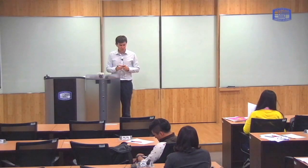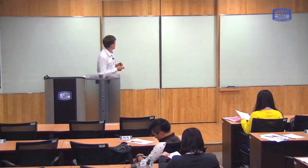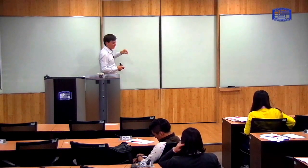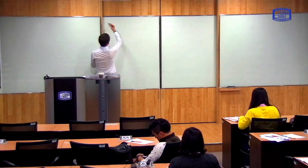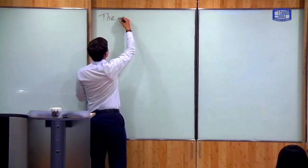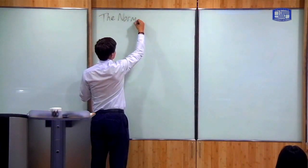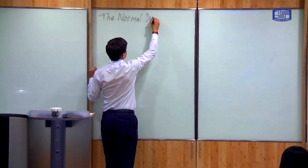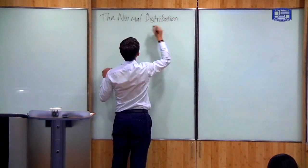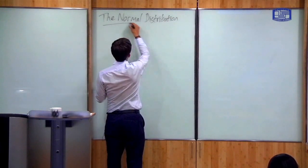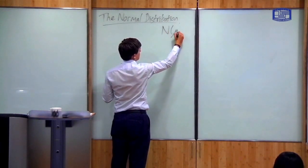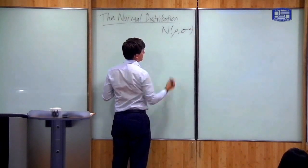I'm going to give you one more example of a probability space, and this one is the most important — you've almost certainly heard of it before. This is the normal distribution, and I'm going to write this as N(μ, σ²).